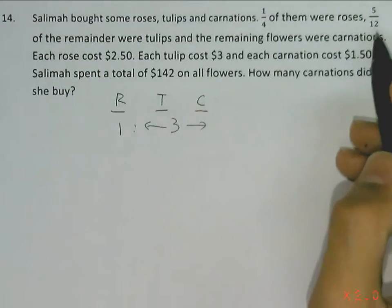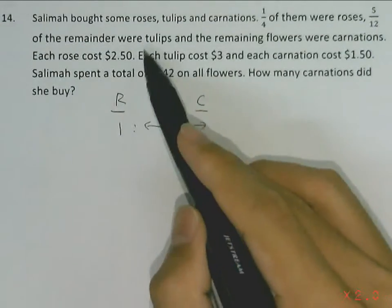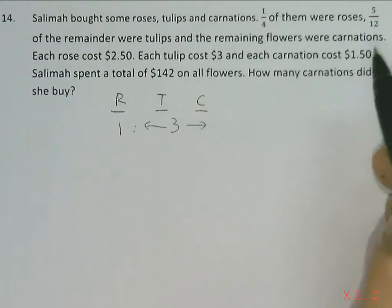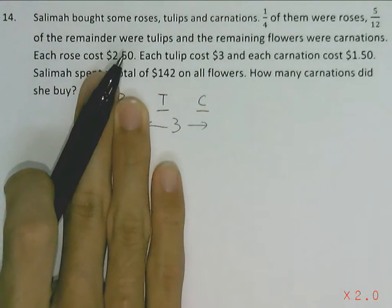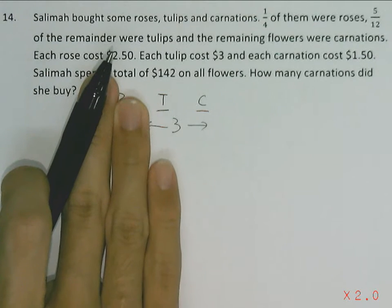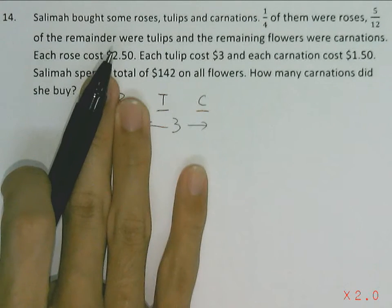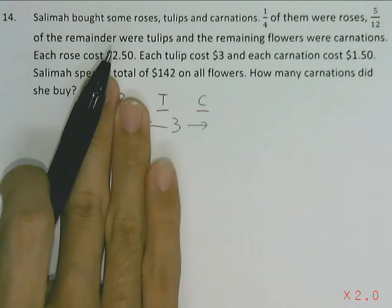While the remaining 5/12 of the remainder were tulips and the remaining flowers were carnations. So out of the tulips and carnations, 5/12 of them were tulips and the remaining 7/12 were carnations.